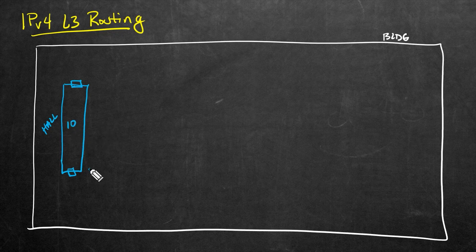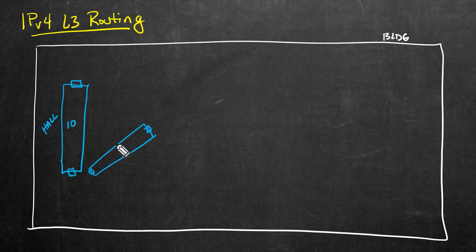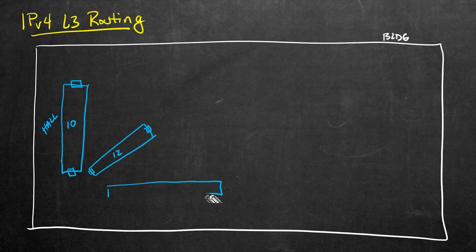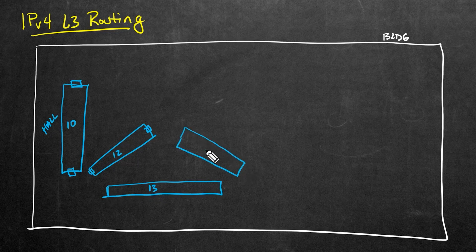Let's draw in another hall here, with doors on the ends and doors on the sides for other offices. Let's call this one hall number 12. If we design the building, we can decide on what we're going to number these halls. Let's create a skinny little hall — that's going to be hall 13. And how about another hall right here? Let's call that hall 23, with little doors at each end.